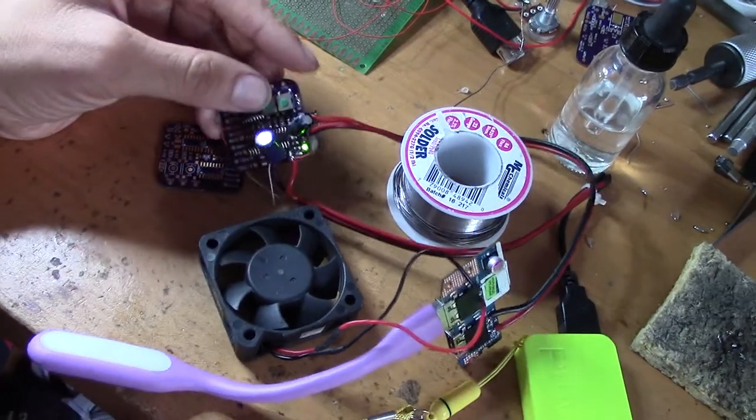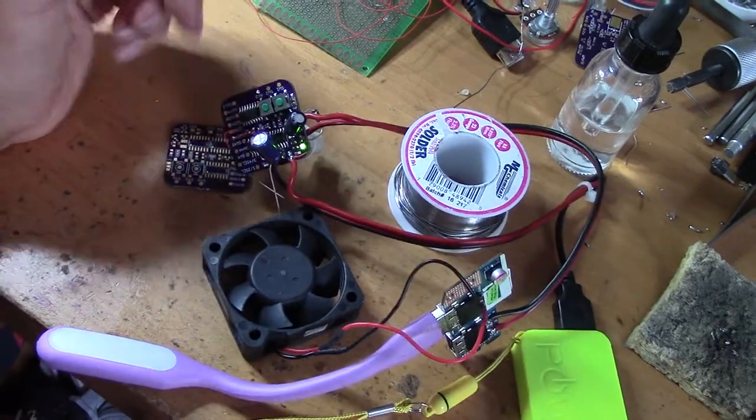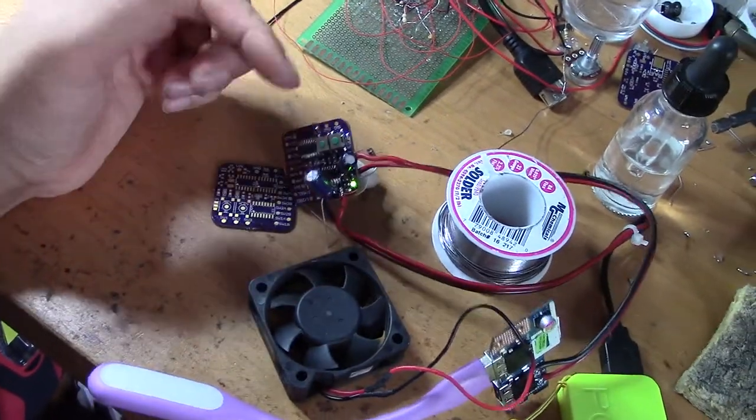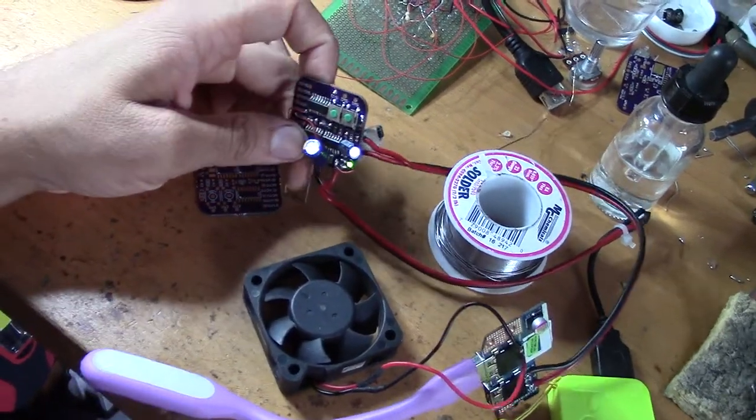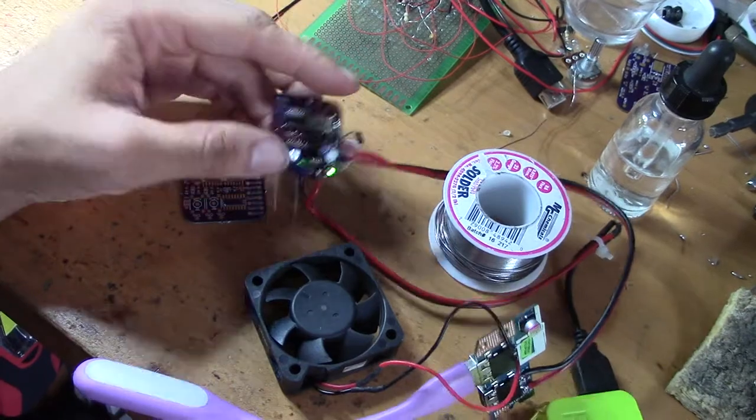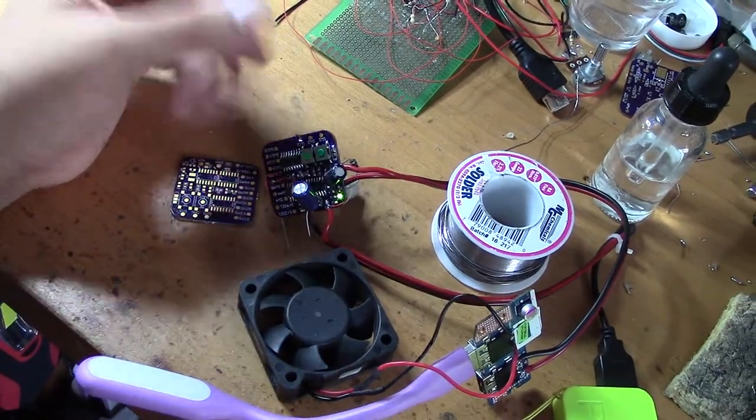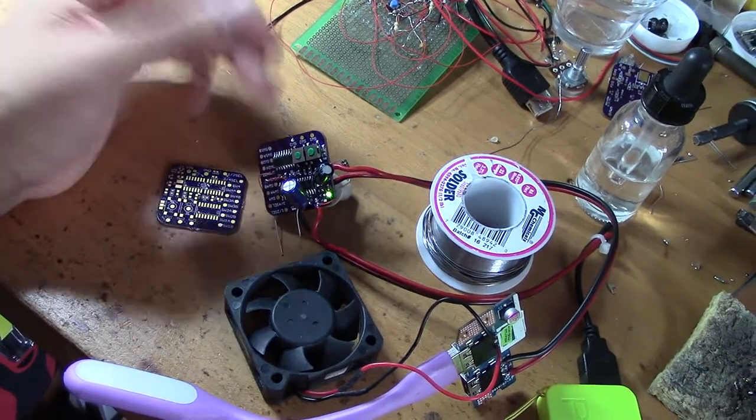So the first thing that this does is it is a soft start latch and there's actually four of these on here. That's really nice if you want to just start something with the push of a button instead of having a mechanical switch that will fail over time. It's very useful and also saves power because it's very low power consumption.